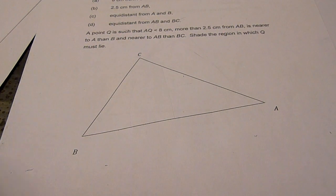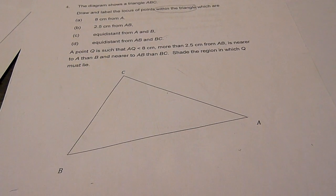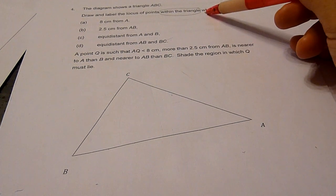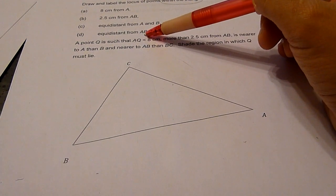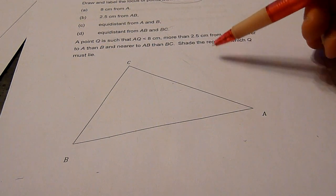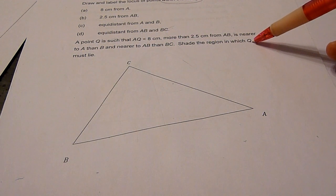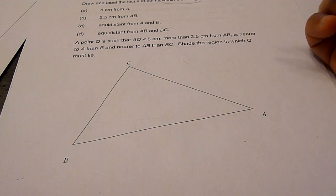In this question, there are two parts. First, we are going to draw the locus of points within a triangle which fulfills these four conditions. And next, we are to identify the region where a point Q lies, and this must fulfill another set of conditions given here.